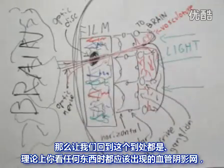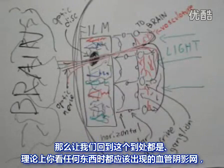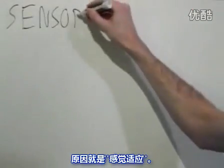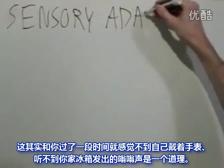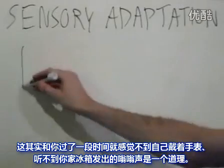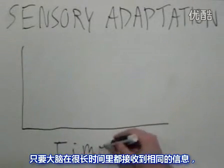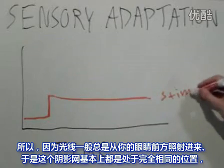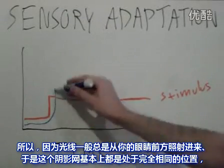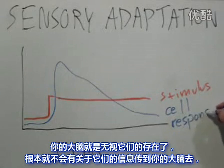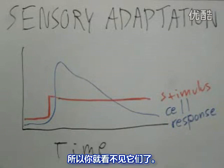Going back to this network of shadows you should theoretically see everywhere you look — why don't you see them? The reason is sensory adaptation. This is kind of the same process that causes you to forget you're wearing your wristwatch, or to stop hearing your refrigerator humming after a while. Whenever the brain receives the same information for a long period of time, it basically stops processing it. Since this network of shadows is pretty much always in the same exact spot — since light is always coming from the front of your eye — your brain just doesn't see it anymore. You literally don't have signals about those shadows going to your brain, and therefore they're invisible to you.